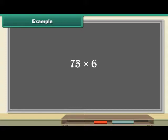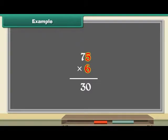Example: Multiply 75 by 6. Place the numbers one below another. Multiply 5 by 6. 5 sixes are 30. Place 0 below 6 and 3 above 7. Multiply 7 by 6. 7 sixes are 42. Add 42 and 3. Write 45 below 7. The answer is 450.